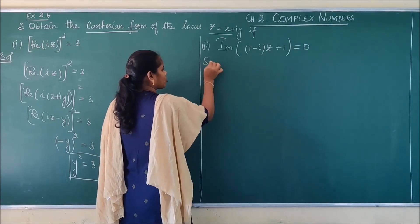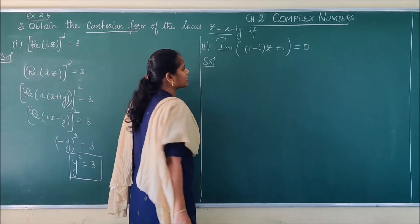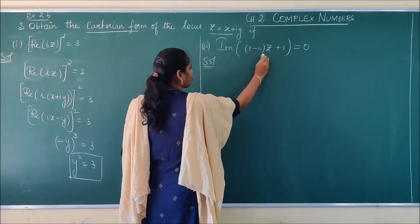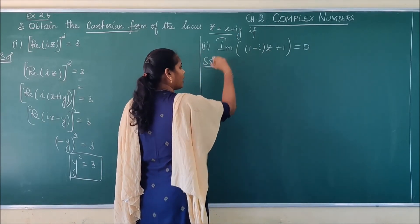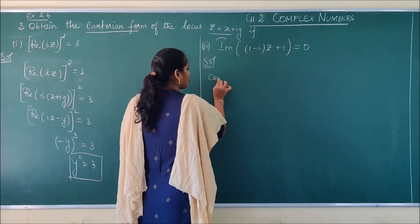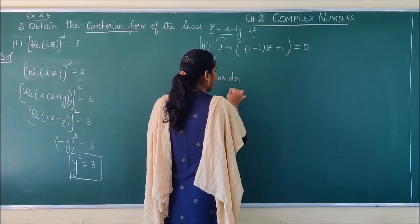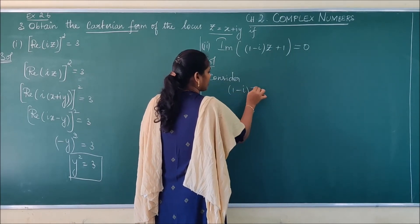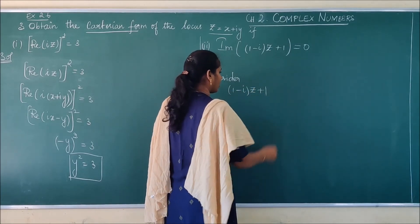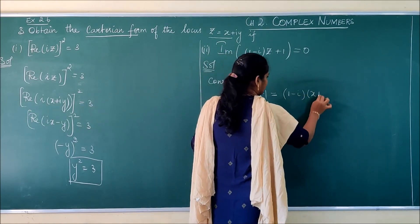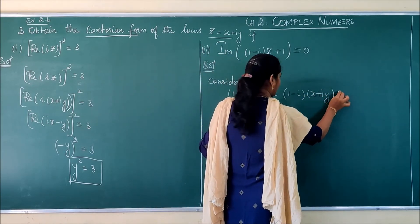The same thing I am going to do. Before that, I am going to consider, I have two things, so I am going to change this into Cartesian form, then I will find the imaginary part. First, I am going to consider the values in the bracket: (1 minus i)(z plus 1). So 1 minus i, z is replaced by x plus iy plus 1.